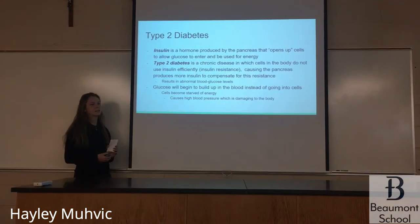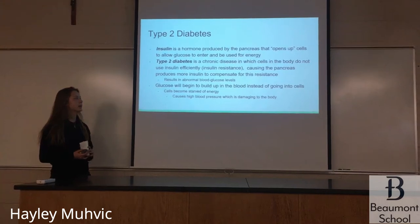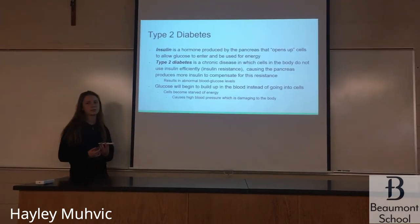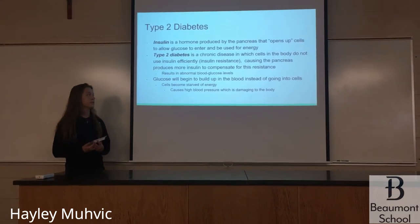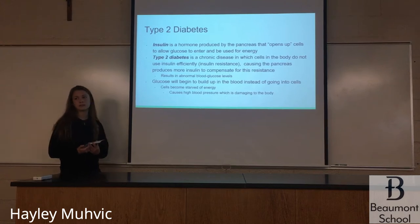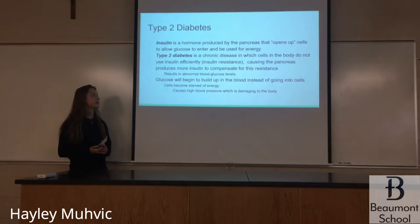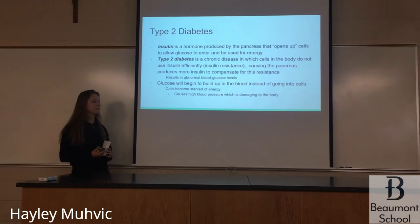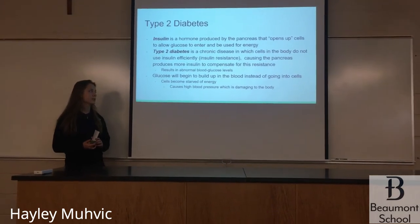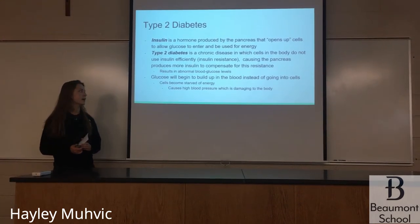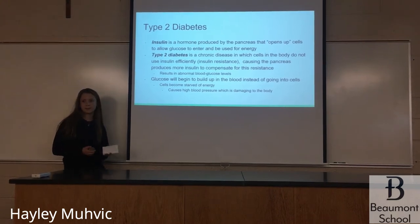I'm going to give you a background on type 2 diabetes. Insulin is a hormone produced by the pancreas that opens up cells to allow glucose to enter and be used for energy. Type 2 diabetes is a chronic disease in which cells in the body do not use insulin efficiently — that's called insulin resistance. That causes the pancreas to produce more insulin to compensate, resulting in an abnormal blood glucose level. Glucose builds up in the blood instead of going into cells, cells become starved of energy, and that causes high blood pressure, which is damaging to the body.